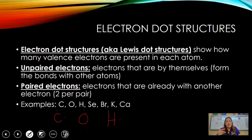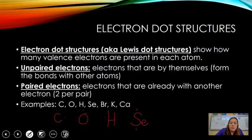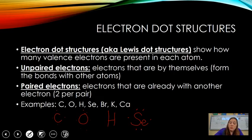Hydrogen has one valence electron because it's in group 1. Selenium is in the same group as oxygen, and it's important to note that elements in the same group have the same-looking Lewis dot structure because they have the same number of valence electrons. Selenium has six valence electrons. Then we have bromine — bromine has seven valence electrons.